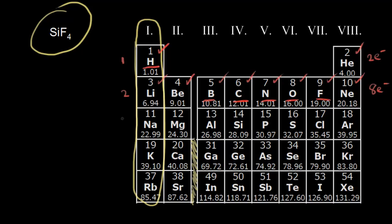Once you get to the third period, you have even more orbitals available. In the first energy level you have only one s orbital; in the second energy level you have s and p orbitals; and in the third energy level you have s, p, and d orbitals. So you can fit more than eight electrons, and therefore it's possible to exceed the octet rule for elements in the third period and beyond. We will see a few examples of that in this video.